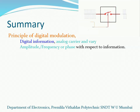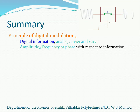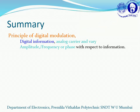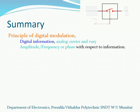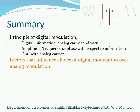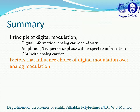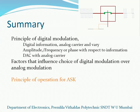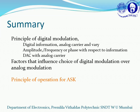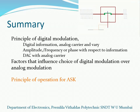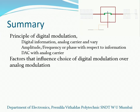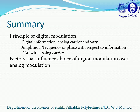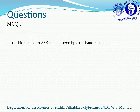Let us summarize. The principle of digital modulation states that the amplitude, frequency, or phase of an analog carrier is varied in accordance with digital information. We saw factors that influence the choice of digital modulation over analog: bandwidth efficiency, power efficiency, and system complexity. The principle of ASK: the amplitude of an analog carrier is varied in accordance with digital information. In OOK, one amplitude is high and the other is zero (null amplitude).